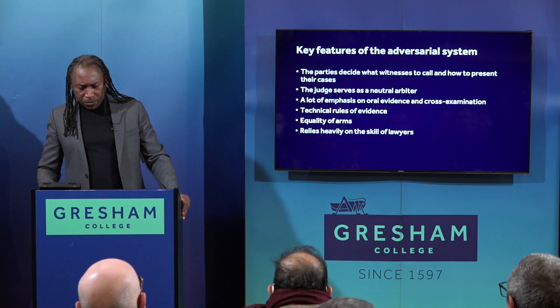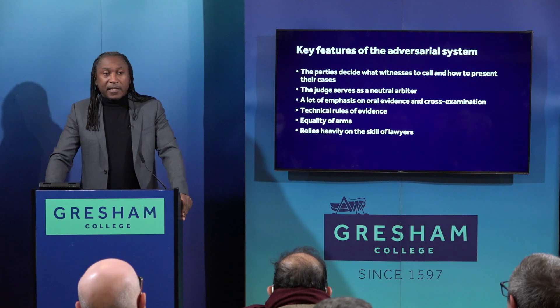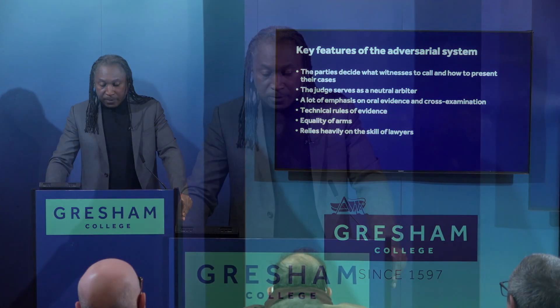Third, there are technical rules of evidence. Just because evidence is relevant doesn't necessarily mean it is admissible. Nowadays, the rules of evidence in civil cases have been significantly relaxed, but in criminal cases, the rules of evidence continue to play an important role. Fourth, the system, at least in theory, strives for equality of arms. The prosecution and the defence in a criminal case, or the claimant and defendant in a civil case, are in theory supposed to be on a level playing field. In reality, we all know that this is not always the case, especially when one party is represented by skilled lawyers and the other is unrepresented. But equality of arms is the theoretical underpinning of our system, even if it is sometimes more honoured in the breach than in observance.